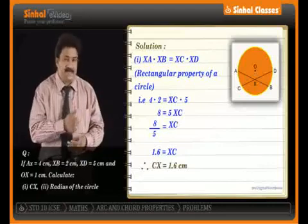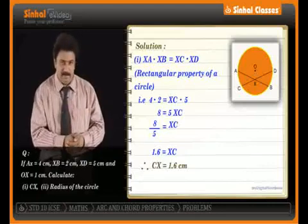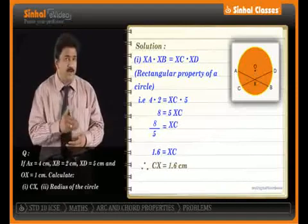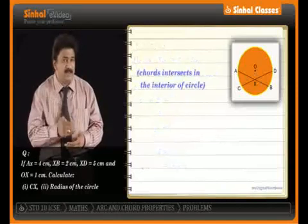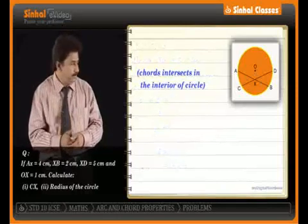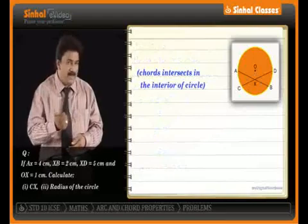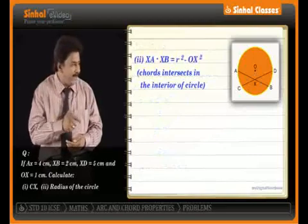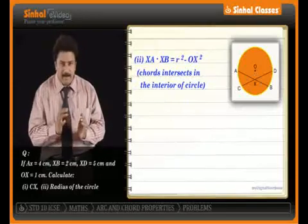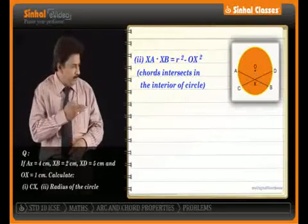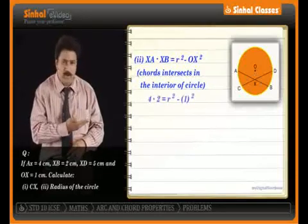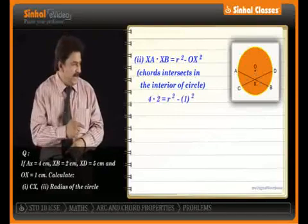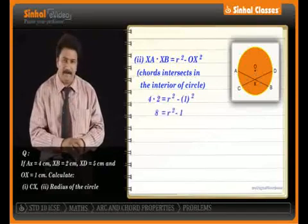Now, to find the radius: when two chords intersect in the interior of the circle, we can find the radius using XA × XB = R² − OX². Putting in the values: 4 × 2 = R² − 1², that is 8 = R² − 1.